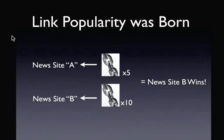Link popularity is simply the question: how many links does this site have going to it? In this example, let's say we have two new sites — your new site has five links from other sites coming into it, and my new site has ten. Well, my site would win because it has more links. Its link popularity is higher and therefore it will outrank you. So the next time a person searches for 'news,' my site will be listed above yours because I have more links. That's one of the variables within the algorithm that Google introduced.